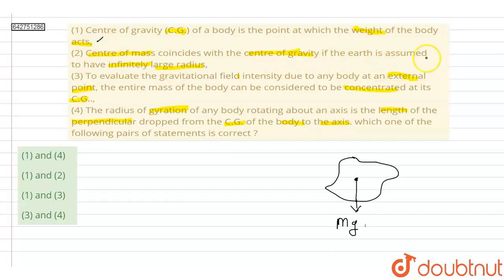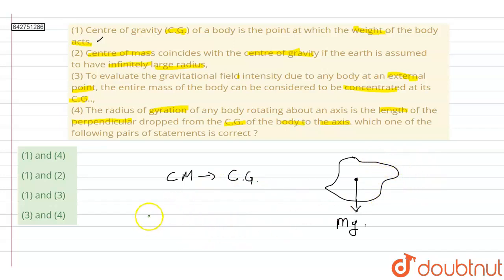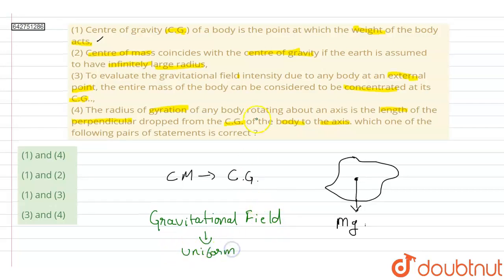The second statement says center of mass coincides with center of gravity if earth is assumed to have infinitely large radius. However, the actual condition for center of mass to coincide with center of gravity is that the mass density of the body must be uniform and the gravitational field must also be uniform. So statement two is incorrect.